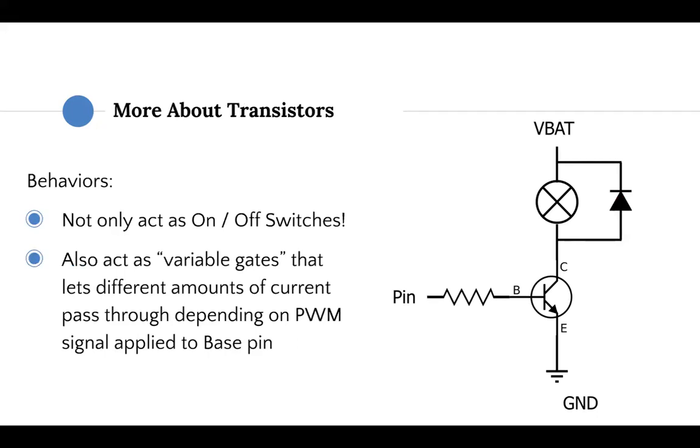So more about transistors. Not only do they act as on and off switches, meaning zero or 100% power being supplied through the circuit, but they also act as variable gates that allow varying amounts of current to pass through from the collector to the emitter. This depends on the signal or the value of the signal between low and high passed into the base pin. This is possible by a digital signal by using pulse width modulation or PWM, and we'll go over that in an upcoming slide.